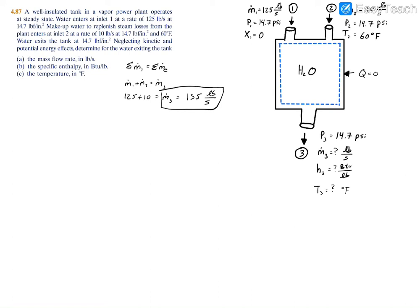For part B, we need to find the specific enthalpy at the exit. I'm going to use the first law of thermodynamics, which is the energy balance. We have 0 equals the heat transfer minus the work, plus the mass flow rates coming in times the enthalpies coming in, minus the mass flow rates exiting times the enthalpies exiting.